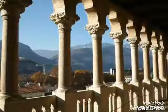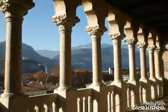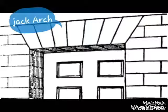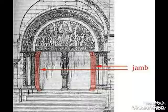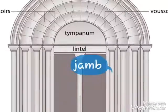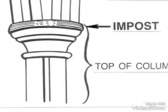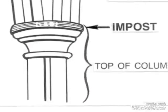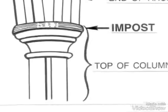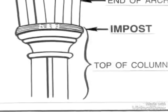Loggia: an elaborate gallery or porch. Jack arch: the jack arch is the same as the flat arch. Jamb: the name for one of the vertical members on either side of a door, window, or fireplace. Impost: a decorative element found at the spring point of an arch.